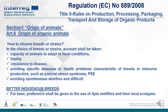The question is how to choose breeds or strains. In the choice of breeds or strains, account shall be taken of the capacity of animals to adapt to local conditions, vitality, and resistance to disease, with the objective to avoid specific diseases or health problems characteristic of breeds in intensive production such as porcine stress syndrome (PSE), and also to avoid spontaneous abortion and difficult births. In one region or territory there are indigenous breeds, and for bees preference shall be given to the use of Apis mellifera and their local ecotypes.